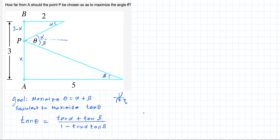So now we have a way to express tangent of theta in terms of x. Tangent of theta then should be tangent of alpha, which is 3 minus x over 2, plus tangent of beta, which is just x over 5, all divided by 1 minus 3 minus x over 2 times x over 5.